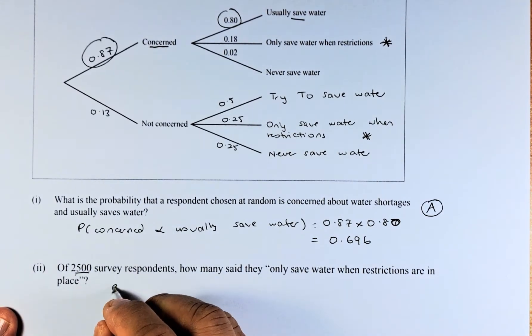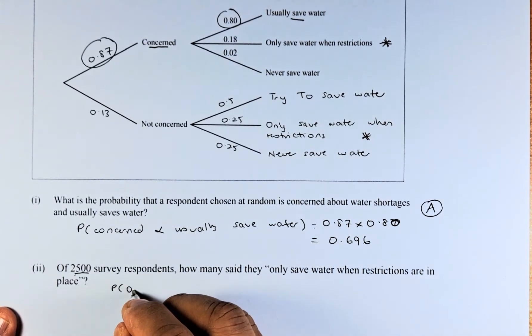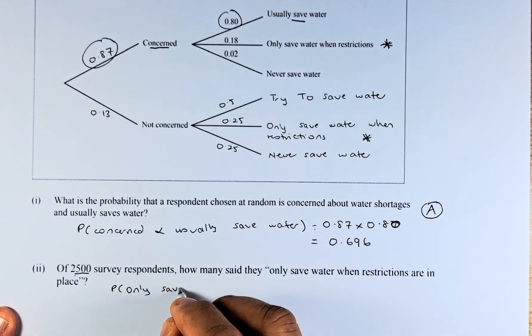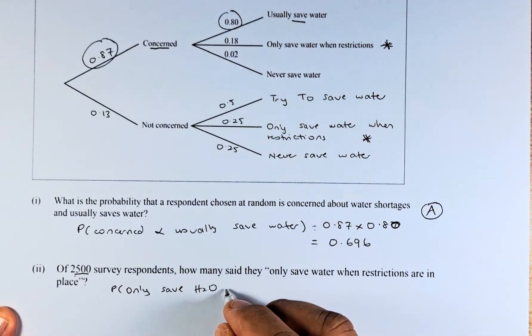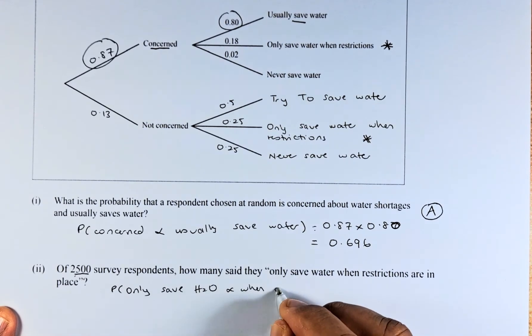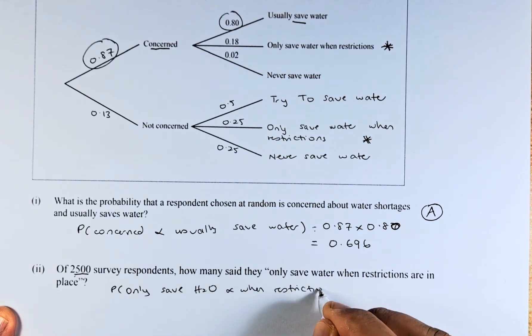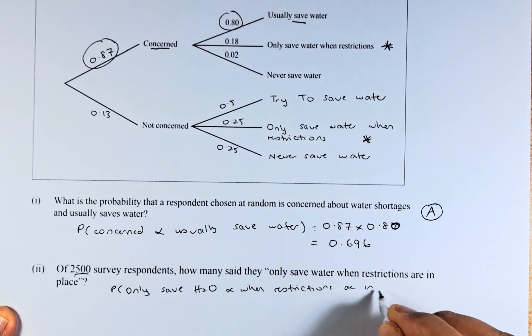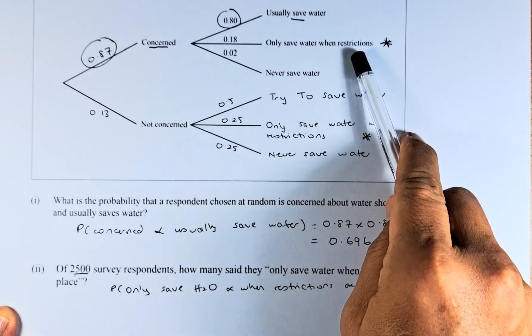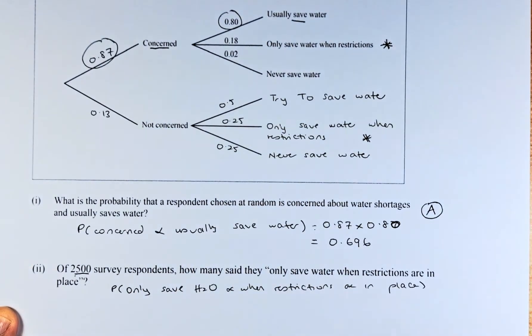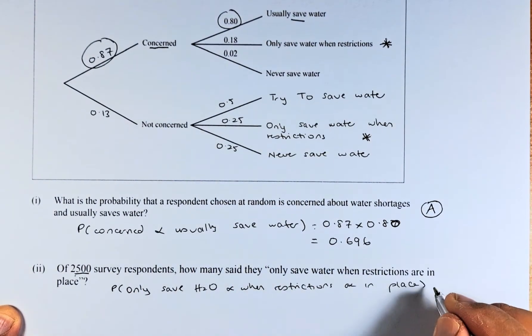The probability that they only save water when restrictions are in place, it could be 2 possibilities. Concern and save water, not concerned, save water when there is restrictions. So, we are going to add them up.